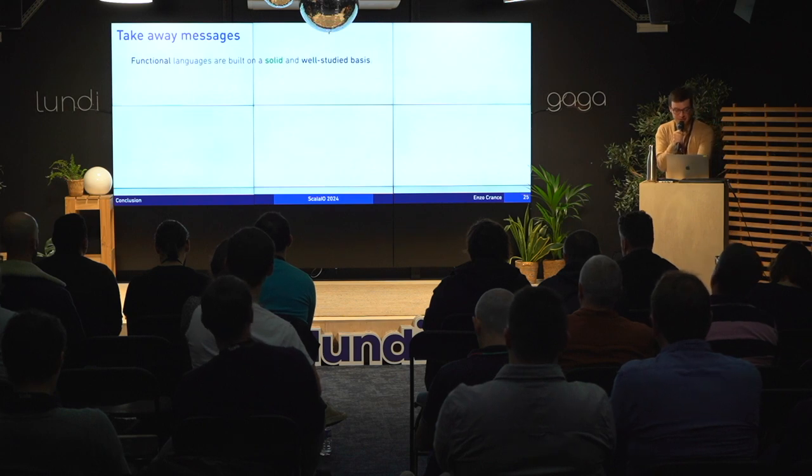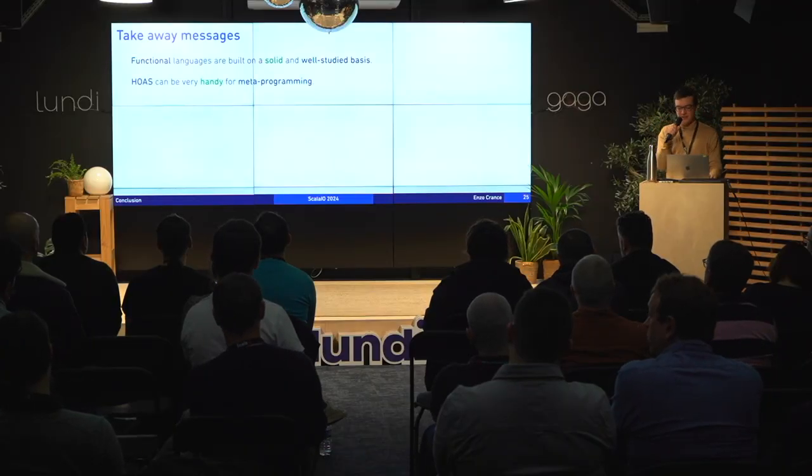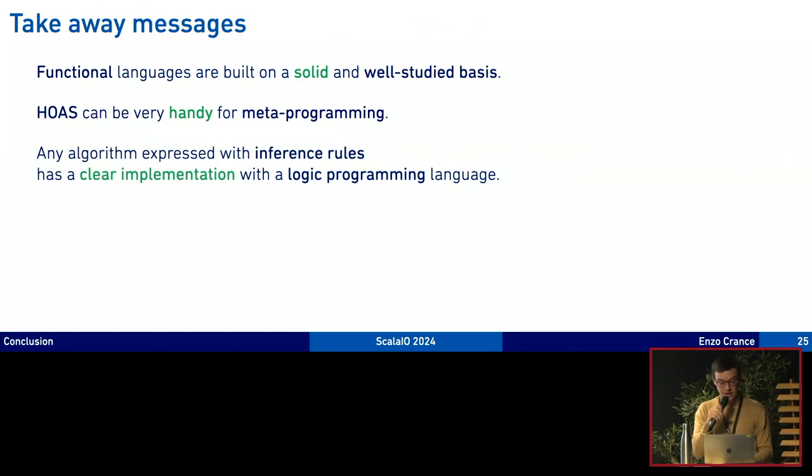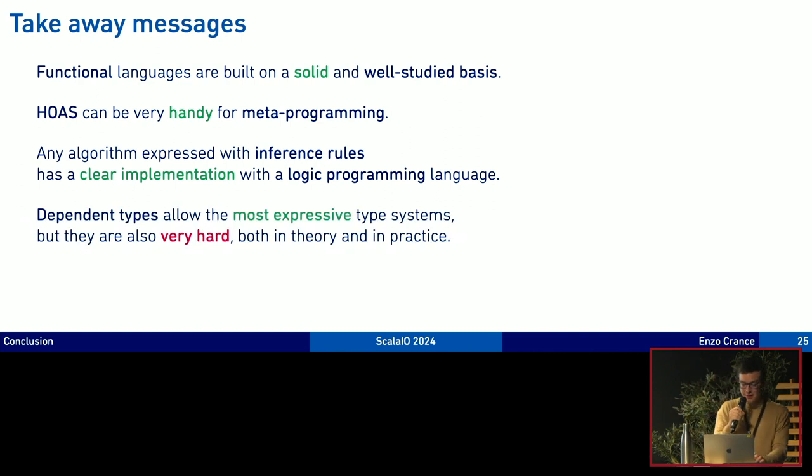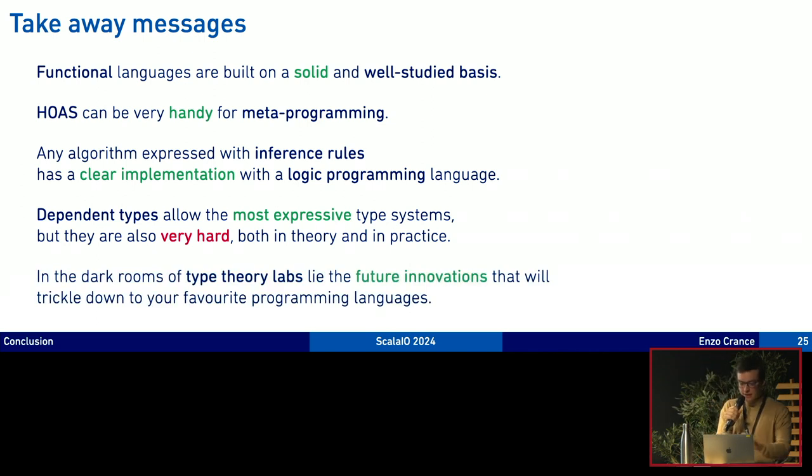Let's conclude. Some messages you can take away from that. First we are very lucky in our domain. Functional languages are built on a very solid basis. The HOAS encoding, higher order abstract syntax, can be very handy for metaprogramming because you use inference rules that you implement very clearly in a logic programming language. If you want a very expressive lambda calculus you must add dependent types but you get a very hard type system, very hard to study both in theory and in practice. That's why proof transfer automation and that kind of tools are trying to add grease to the gears to make it easier to use. In the dark rooms of type theory labs lie the future innovations that will trickle down to your favorite programming languages.